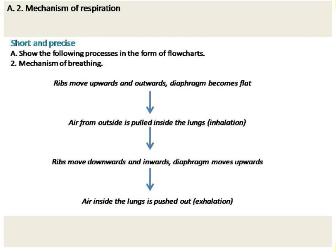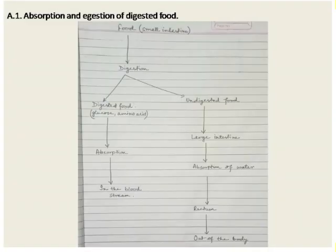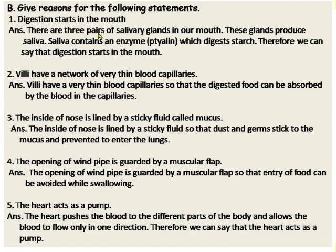Now let us come to the next question — Section B: give reasons for the following statements. Statement one: digestion starts in the mouth. The answer is: there are three pairs of salivary glands in our mouth. These glands produce saliva. Saliva contains an enzyme called ptyalin, which digests starch. Therefore, we can say that digestion starts in the mouth.